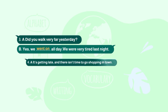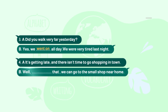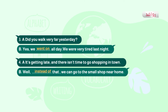Number four. A: It's getting late and there isn't time to go shopping in town. B: Well, instead of that, we can go to the small shop near home. The first speaker says it's too late to go shopping in town, and the other replies 'instead of that, we can go to the small shop near home.'